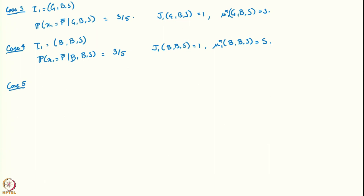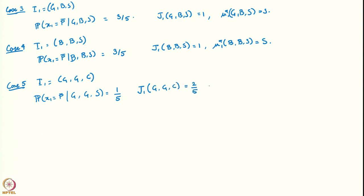Now let us go to cases 5 and 6. Case 5 is when the information is GGC. Here the probability turns out to be 1/5, and since the cost from continuing is 2/5, which is less than the cost from stopping, the optimal action is to continue. So j1(GGC) equals 2/5, and mu1*(GGC) equals C.